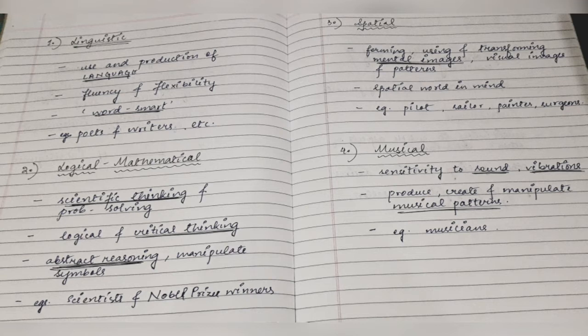The third type of intelligence given by Howard Gardner is Spatial Intelligence. Persons high on this type of intelligence are usually involved in forming, using, and transforming mental images and visual images and patterns. Those who have high spatial intelligence can think of their mental images, use them in various ways, and transform them. They are very keen on observing visual images and patterns, and can easily create the external world in their mind.